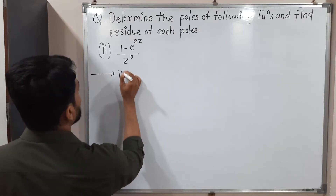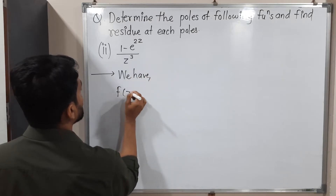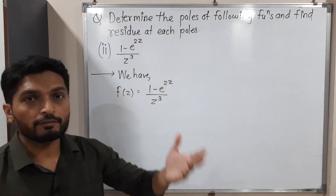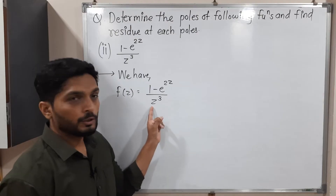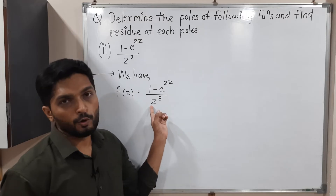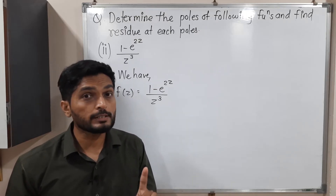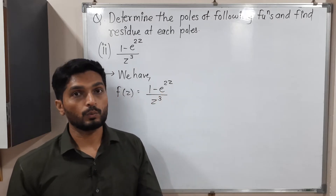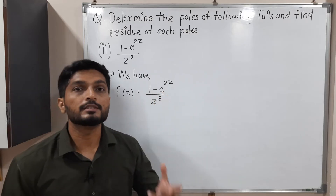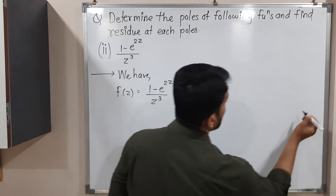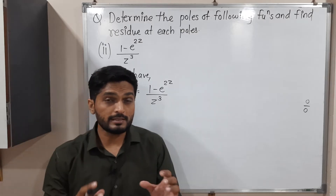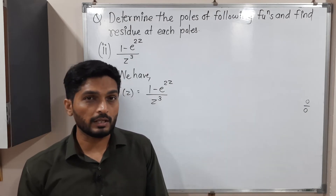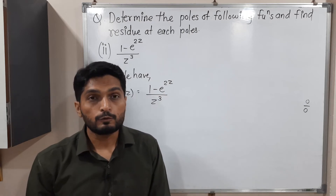Now let us discuss the second example. We have f(z) equal to (1 minus e^2z) over z^3. Our task is the same — find poles and then find residue at those poles. Here z equal to 0 will give 0 in the denominator, making it a singular point. But if we put z equal to 0 in the numerator: e^0 is 1, so 1 minus 1 equals 0. Both numerator and denominator are 0, so it is an indeterminate form — observation method fails here.